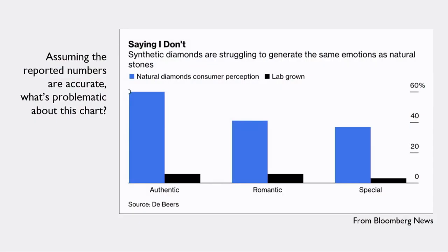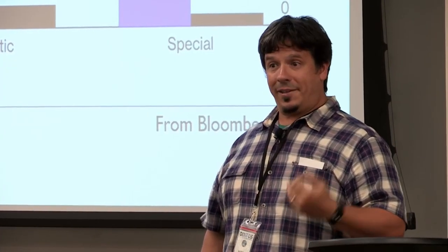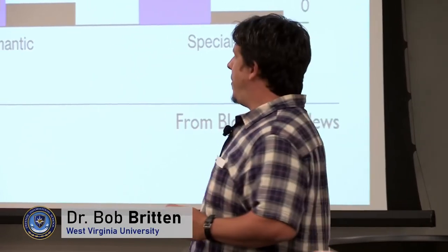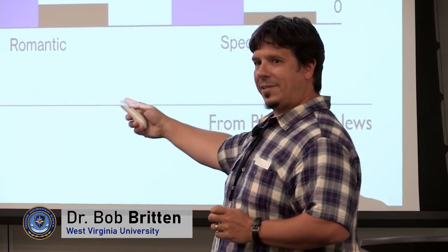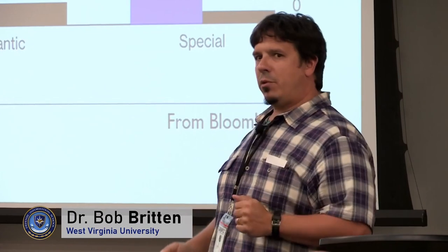And sometimes we're not even trained to look at what we need to look at. Every number in a chart may be accurate, but what's problematic might be the source. A chart from De Beers—the world's largest diamond mining company—showing that people way prefer natural diamonds over lab-grown ones: is De Beers an accurate source about diamond mining? Absolutely. But is it an unbiased source for a survey on people's perceptions of diamonds? That's where you want to find a different source.